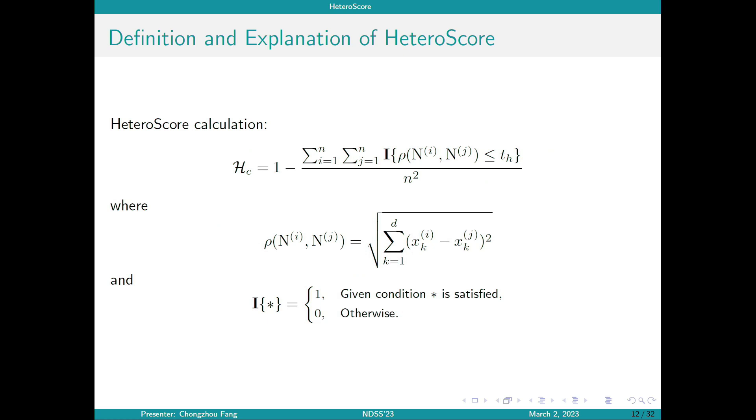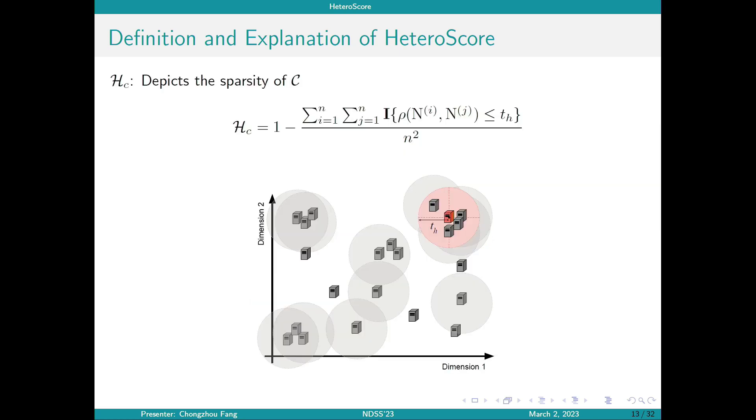The heteroscore calculation process is shown on this page. Here we utilize Euclidean distances to model similarity and count the number of node pairs that are close enough to each other using an indicator function. In the calculation of heteroscore, we iterate through every pair of nodes and calculate the Euclidean distances between them. We count the number of node pairs whose distances are within the predefined threshold, then normalize it and use one to subtract it to obtain the metric heteroscore.